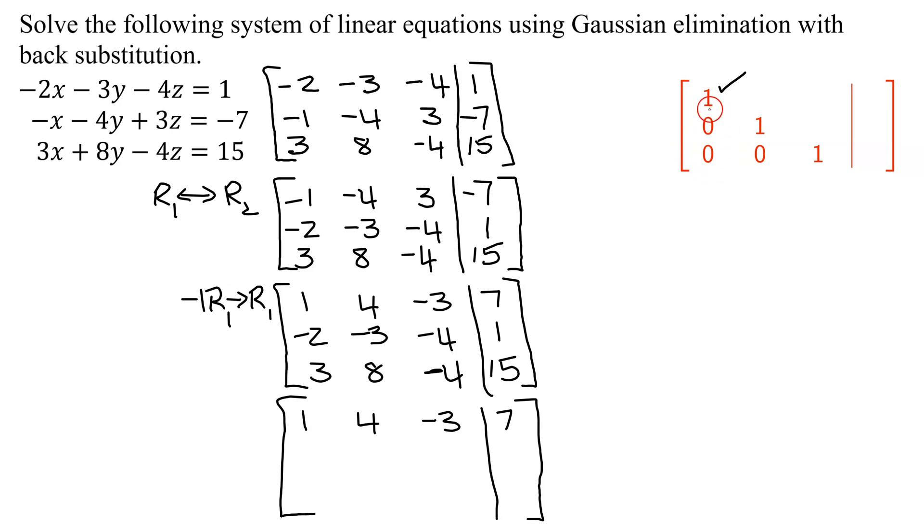Now I need to get zeros below that. The way we get zeros is we take the element that you turned into a 1, and you multiply this row by the opposite of this number. So to make the negative 2 a 0, the opposite of negative 2 is positive 2. So I'm going to do 2 times row 1 plus row 2, and put it in row 2. To help me reduce arithmetic errors, I'm going to do some scratch work for this step.